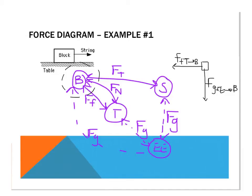The next force on our system schema is normal force — the table also applies that to the block. The normal force means 'normal' as in perpendicular, not normal as in it's always there — it's not always there. It's perpendicular to the two surfaces that are interacting. The surfaces are the block and the table, and perpendicular to that would be up and down. So in our force diagram, the normal force will be pointed up — F_N for normal force — and the table applies that to the block.